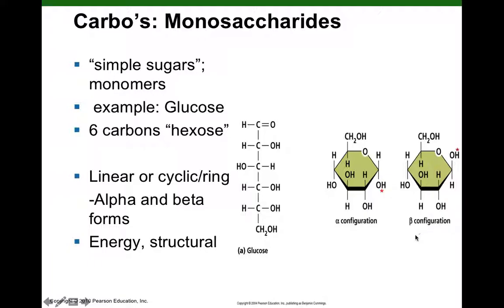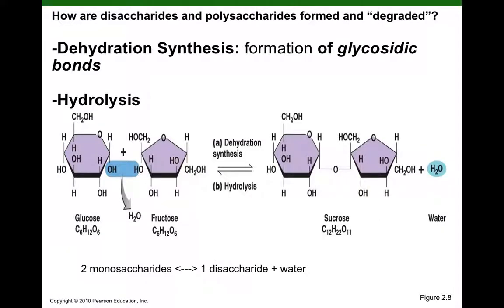Why does this matter? When we're making polysaccharides from glucose, the structure is determined by whether we use alpha or beta glucose. Cellulose is made from beta glucose, while starch (amylose and amylopectin) and glycogen are polysaccharides made of the alpha glucose configuration. Glucose can be used as an energy source and also as a structural component.